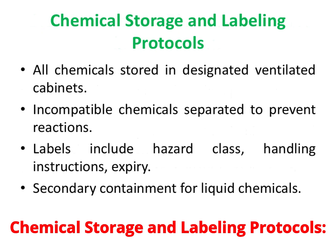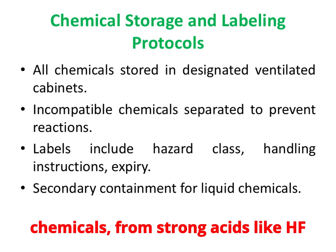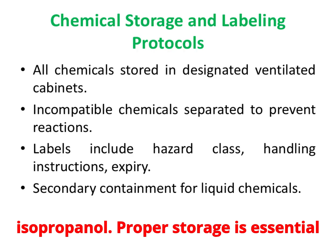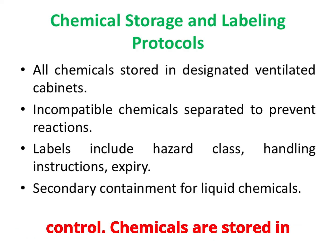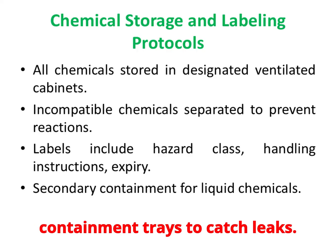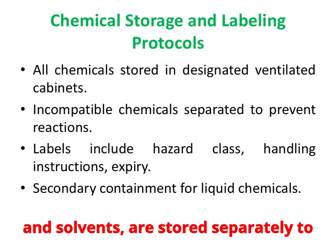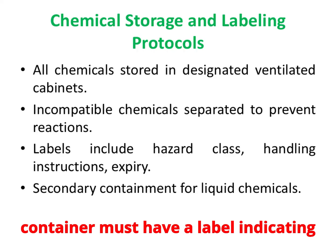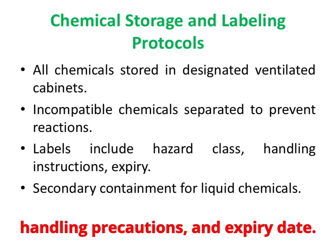VLSI fabrication involves many hazardous chemicals, from strong acids like HF and H₂SO₄ to solvents like acetone and isopropanol. Proper storage is essential for both safety and contamination control. Chemicals are stored in ventilated cabinets with secondary containment trays to catch leaks. Incompatible chemicals, such as acids and solvents, are stored separately to avoid dangerous reactions. Every container must have a label indicating its chemical name, hazard classification, handling precautions, and expiry date.